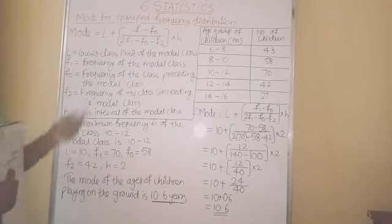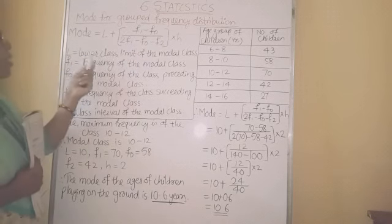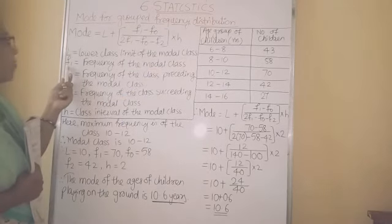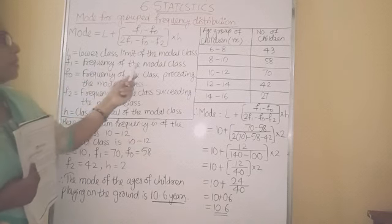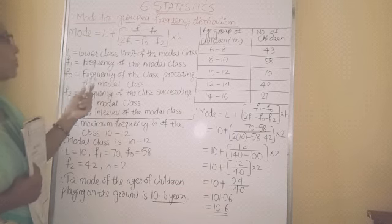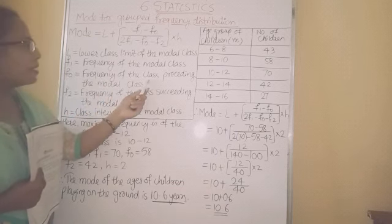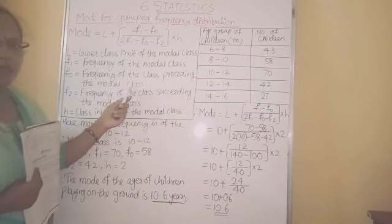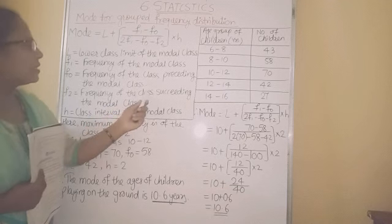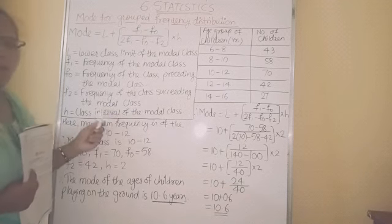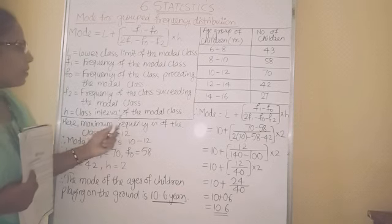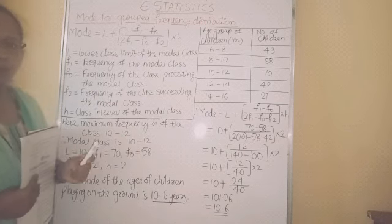L means lower class limit of the modal class. F1 means frequency of the modal class. F0 is the frequency of the class preceding the modal class. F2 is frequency of the class succeeding the modal class. And H is class interval of the modal class.